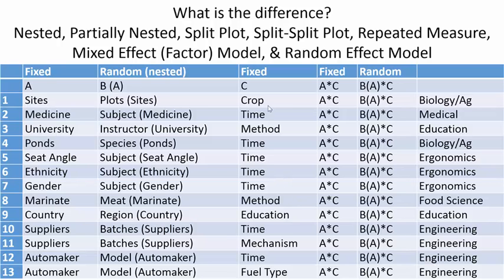Now in all of these examples, they have the exact same F-statistics and p-value calculations because their factor types are the same: A is fixed, B is random and nested in A, and C is fixed. You have the interaction between A and C, and the interaction between B and C. Interaction between A and C is not possible here because B is nested in A — a nested factor cannot be crossed — so only two interactions are possible.